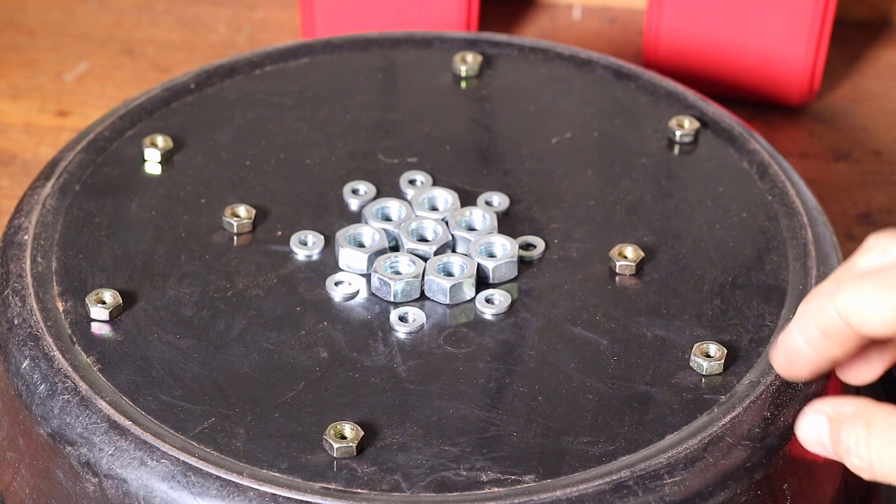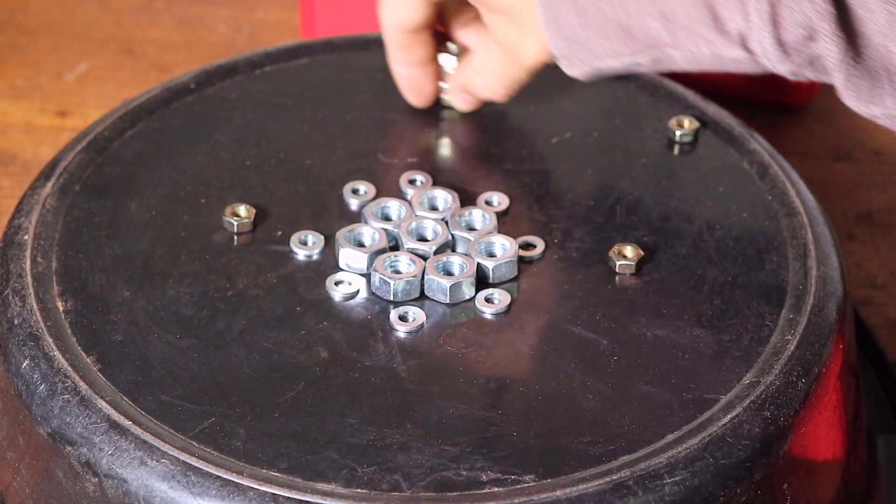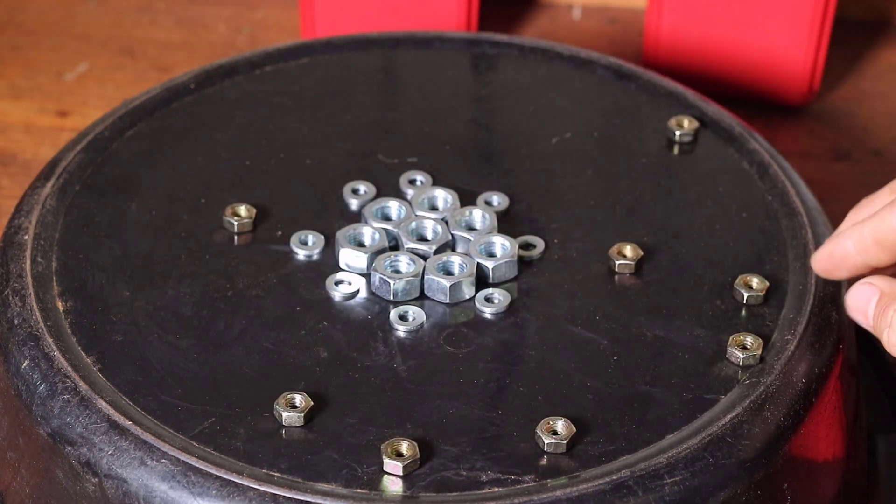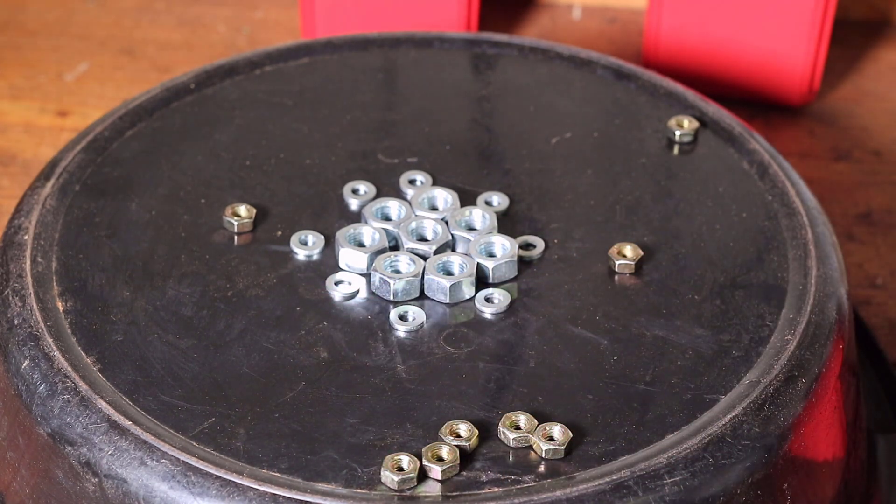Outside of the nucleus there are shells or layers of orbits containing electrons. These electrons are negatively charged. There are some electrons that can move from atom to atom. This movement is what we know as electricity.